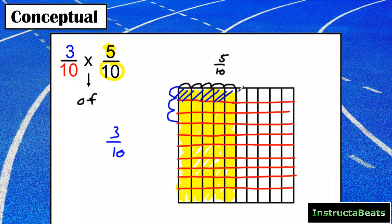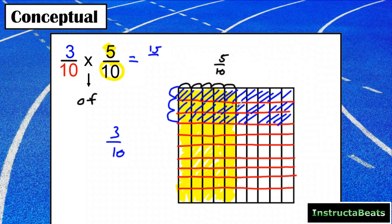I shade in 1 tenth, then the 2nd tenth, then the 3rd tenth. Starting with 5 tenths and shading in 3 tenths of those, any pieces shaded in twice are my numerator: 1, 2, 3, 4, 5, 10, 15. Because I split it 10 this way and 10 that way, I now have 100 total pieces. So 3 tenths of 5 tenths equals 15 hundredths.